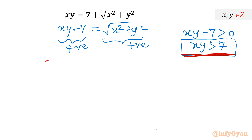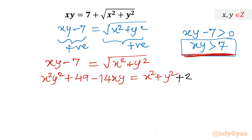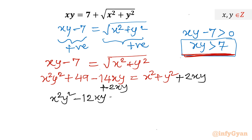Now consider squaring both sides of xy minus 7 equals √(x² + y²). It becomes x²y² + 49 − 14xy = x² + y². I will use a manipulation step: add 2xy to both sides, giving x²y² − 12xy + 49 = (x + y)².